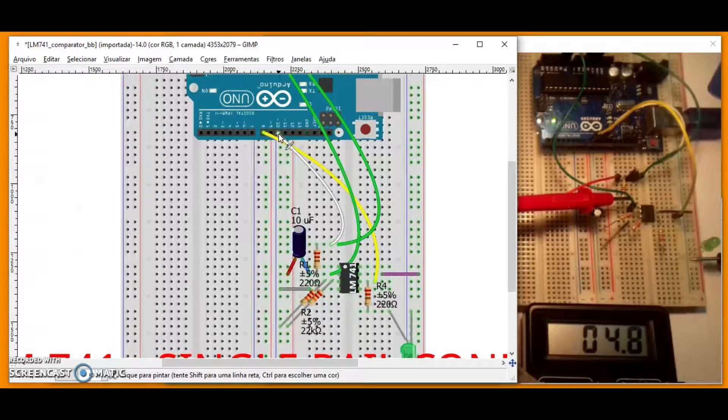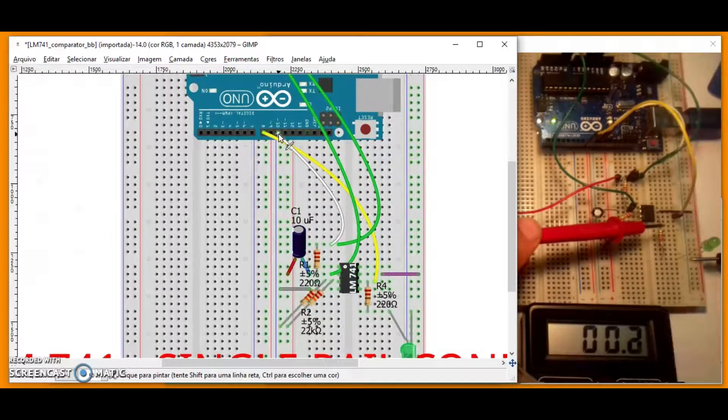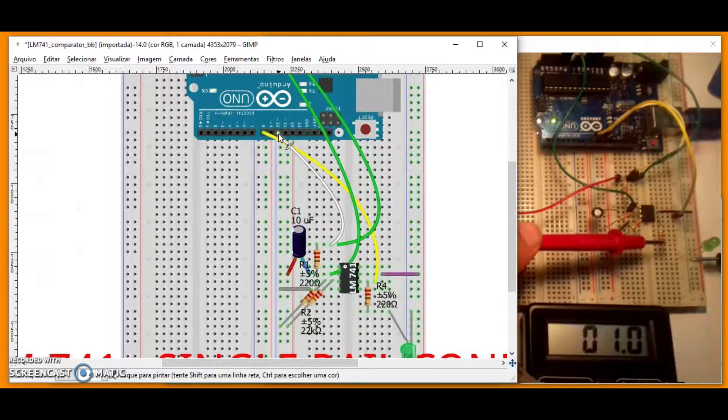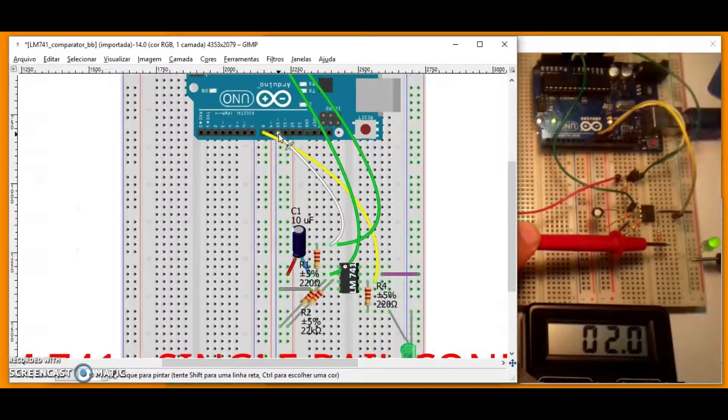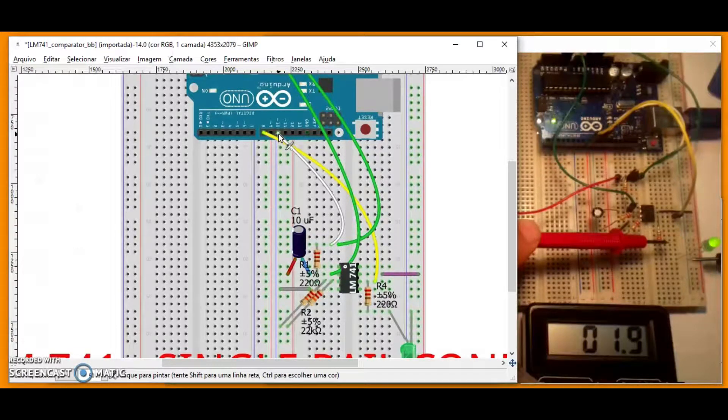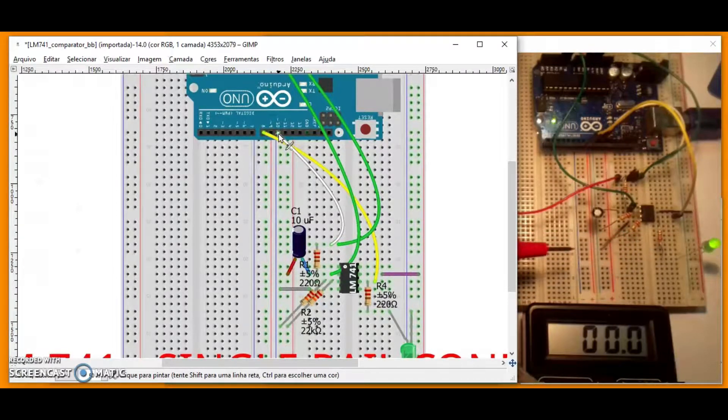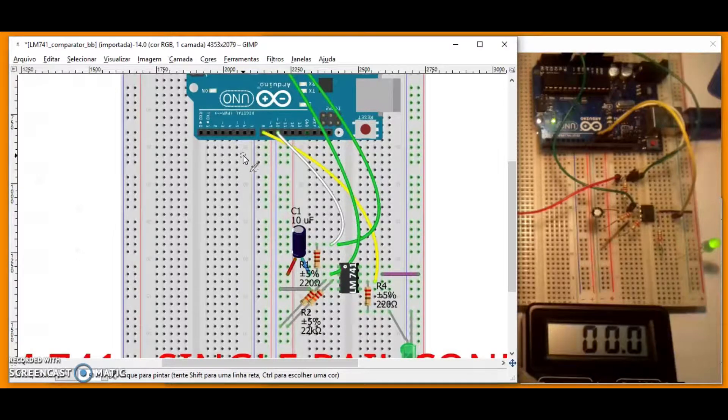This reduces the output range to pin 6 to 1.8 to 4.2 volts. This passes through another 220K resistor to further load the voltage. At the other end, we will have the voltage ranging from 1.7 to 2 volts. This is exactly the voltage to turn the green LED on and off.